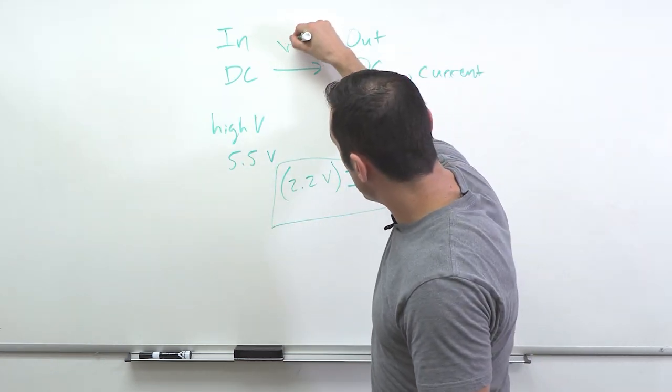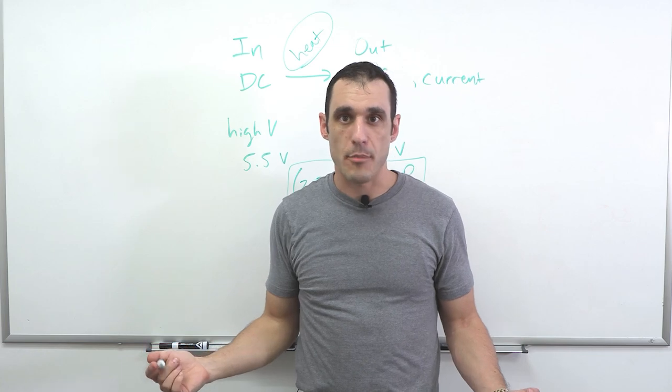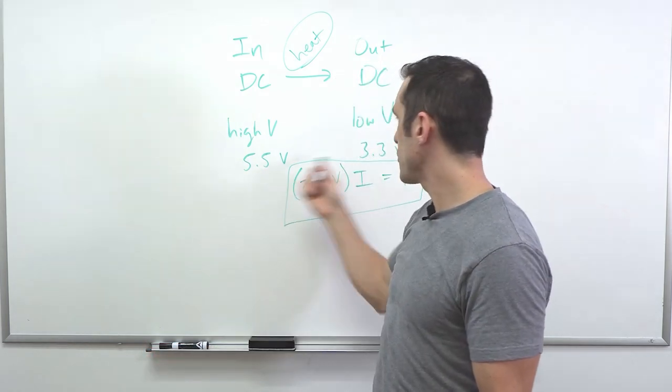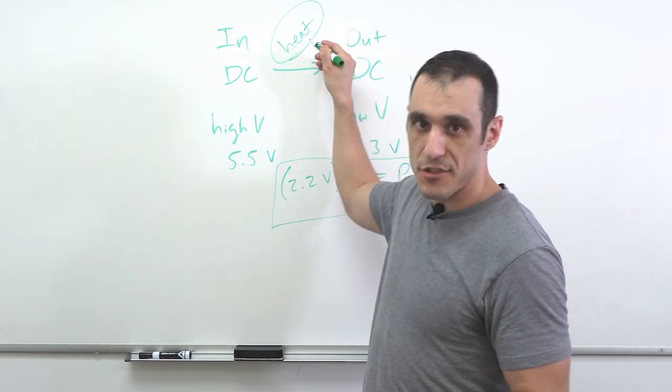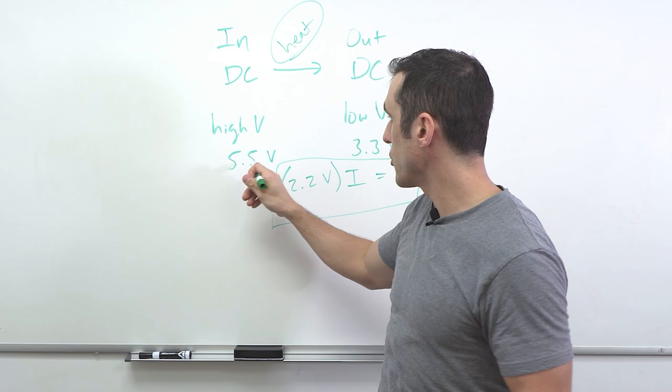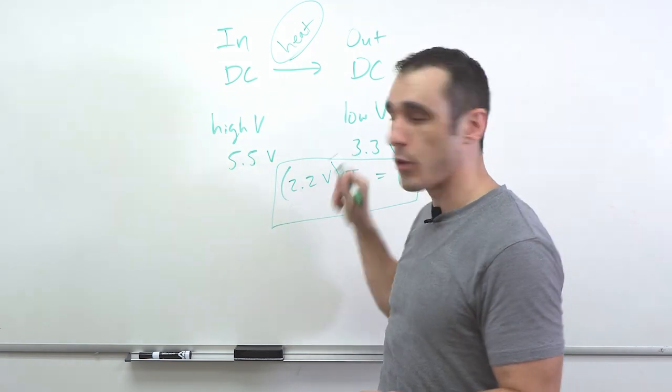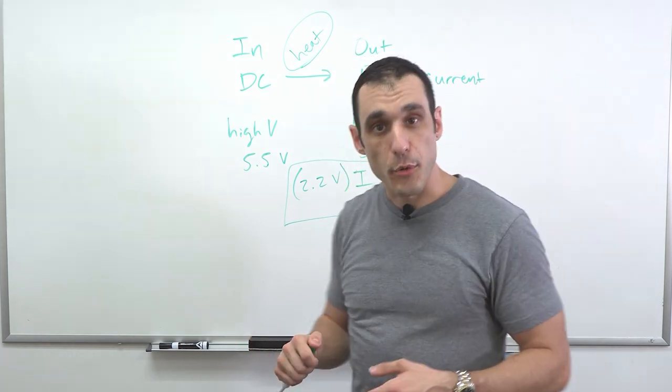So what happens to this power? Well, this power gets dissipated as heat. So LDOs can get hot as you operate them, depending on the difference between these two voltages. So because of this, if you want to get this heat that you generate in your LDO down to zero, you would have to bring your high voltage and your low voltage to be the exact same value. Unfortunately, LDOs don't work like that.